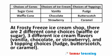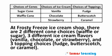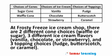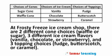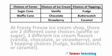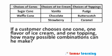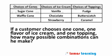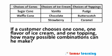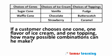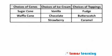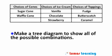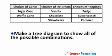At Frosty Freeze ice cream shop, there are two different cone choices, waffle or sugar, three different ice cream flavors, vanilla, chocolate, or strawberry, and three topping choices, fudge, butterscotch, or caramel. If a customer chooses one cone, one flavor of ice cream, and one topping, how many possible combinations can he make? Make a tree diagram to show all of the possible combinations.